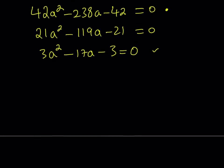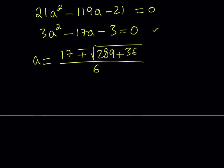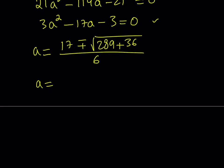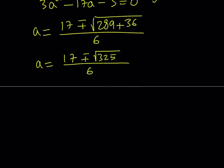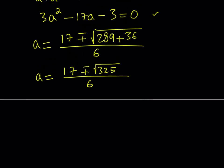From here we can find the values of a by using the quadratic formula. a is going to be negative b, which is 17, plus minus the square root of b squared, which is 289, minus 4ac, but there's a negative sign so double negative. 4 times 3 is 12, times 3 is 36. So that's 289 plus 36 divided by 6. Now 289 plus 36 should equal 325.